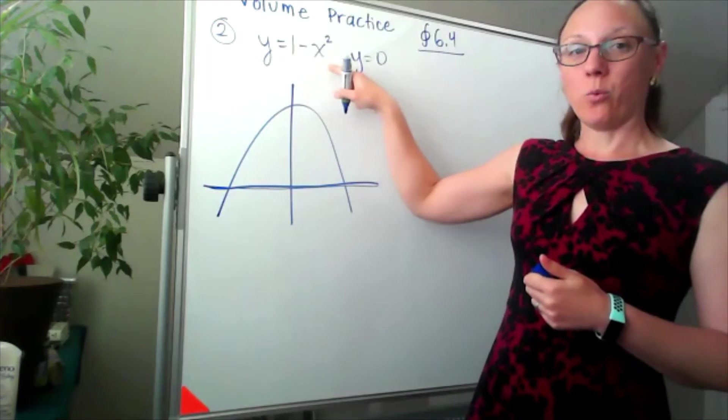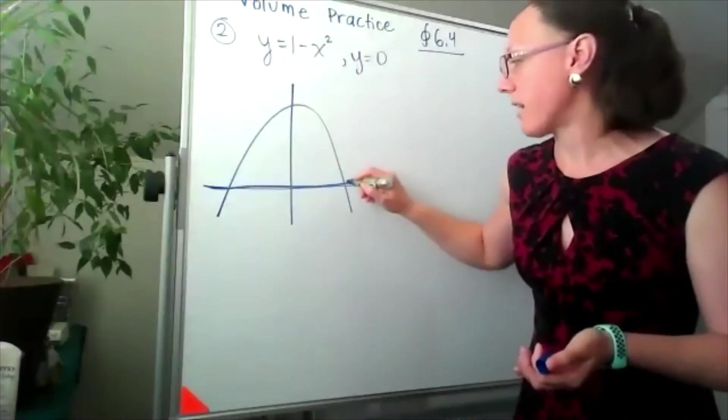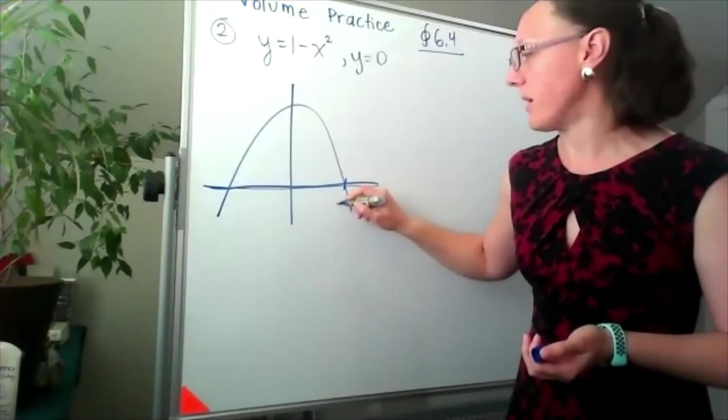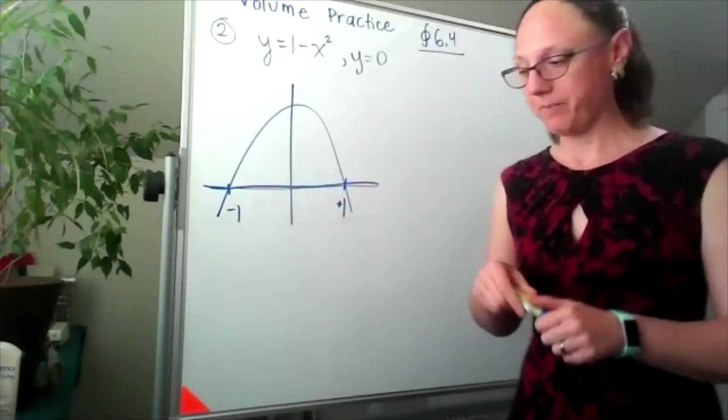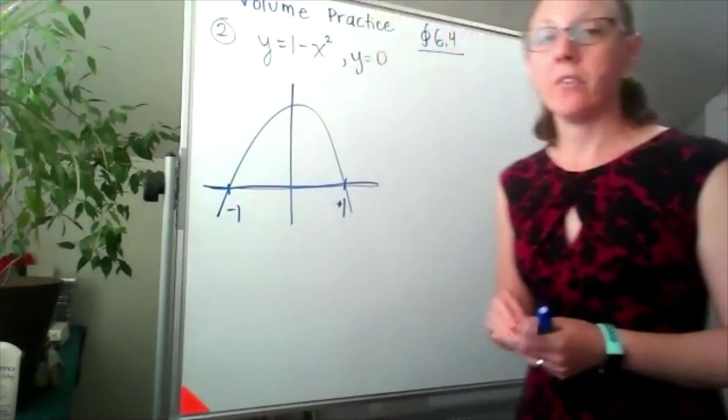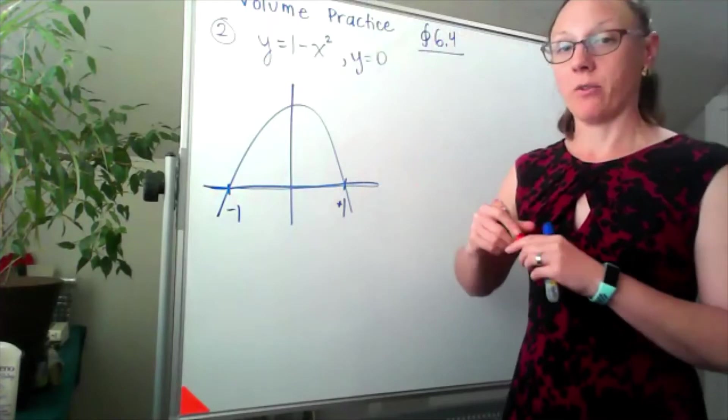Because I already know what the graph of y equals 1 minus x squared looks like, I know that that's going to be a positive one and that should be a negative one. In the question, we're finding the volume of the solid when we revolve this around the x-axis.